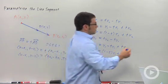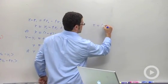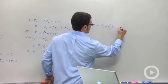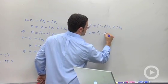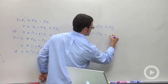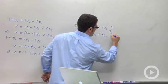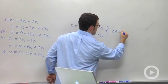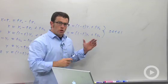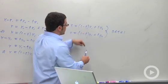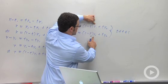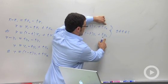And then putting them together, x equals 1 minus T x1 plus T x2. y equals 1 minus T y1 plus T y2. And these equations work for T, again, between 0 and 1. So all you need to come up with the parametric equations for a line segment are the coordinates of the two endpoints, x1, y1 and x2, y2.